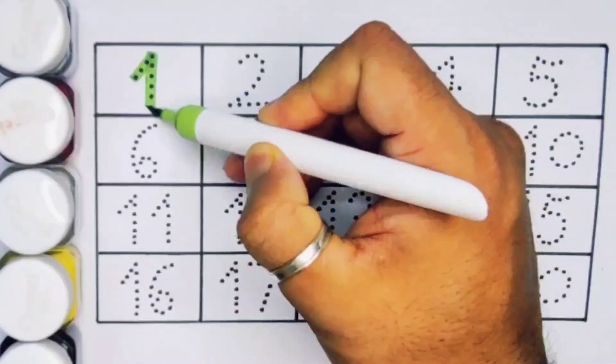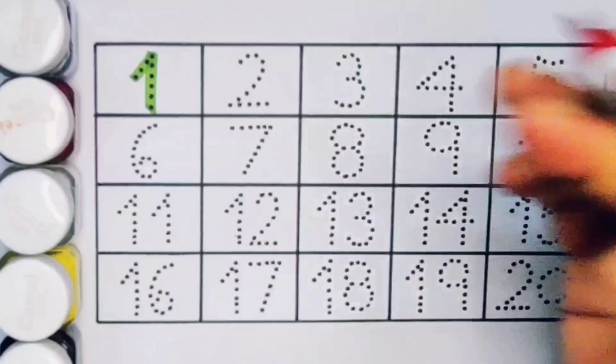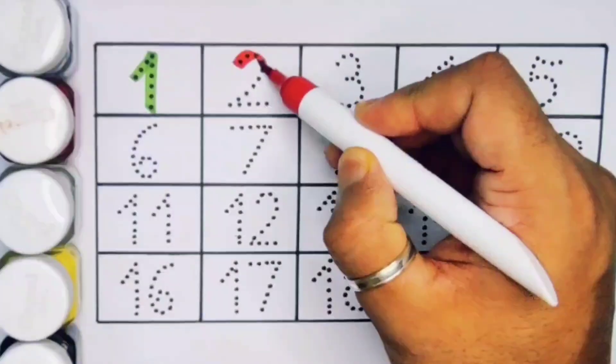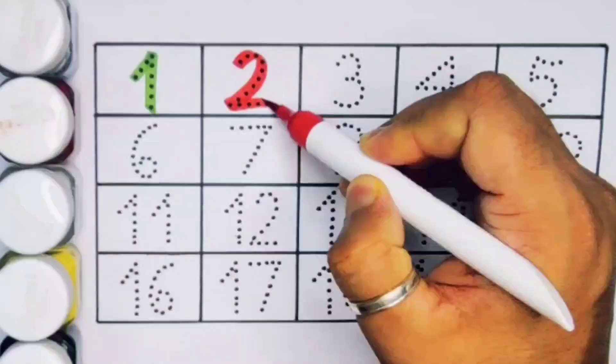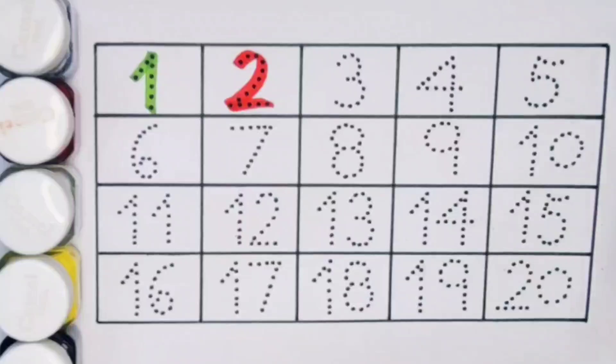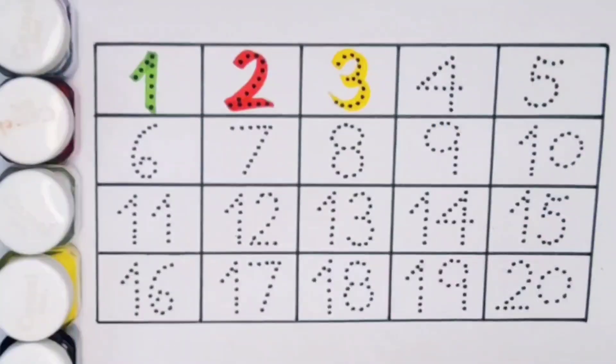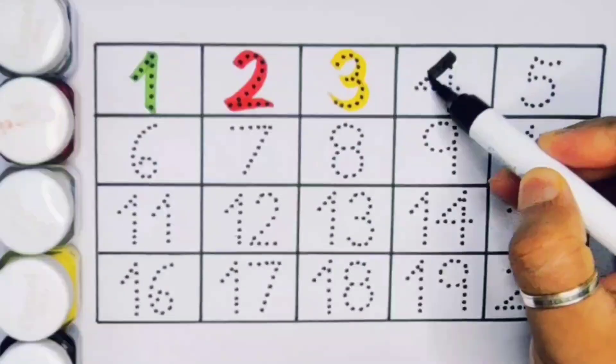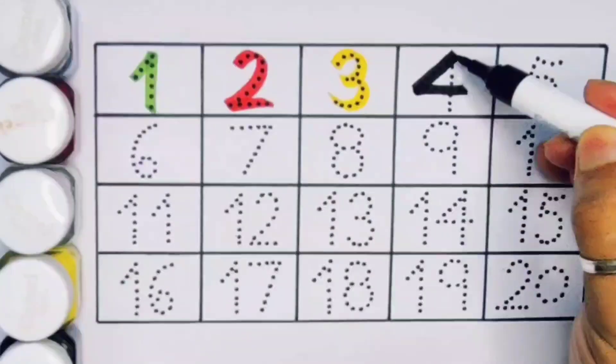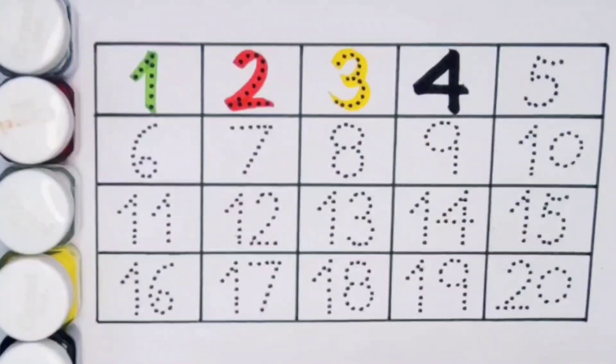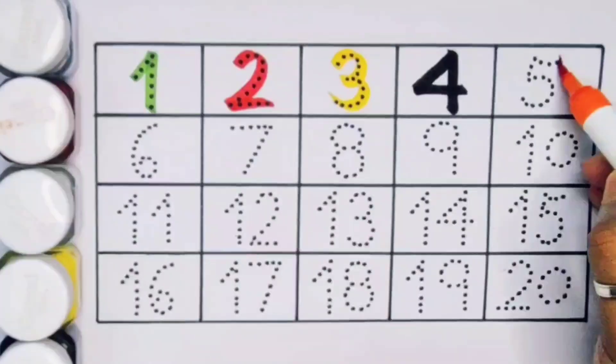Next kids, two, number two. Next, three, number three. Next, four, number four. Next kids, five, number five.